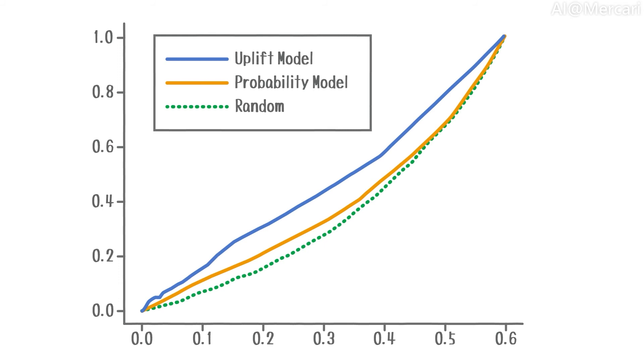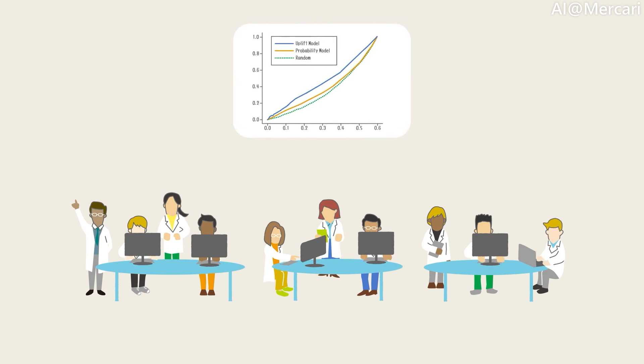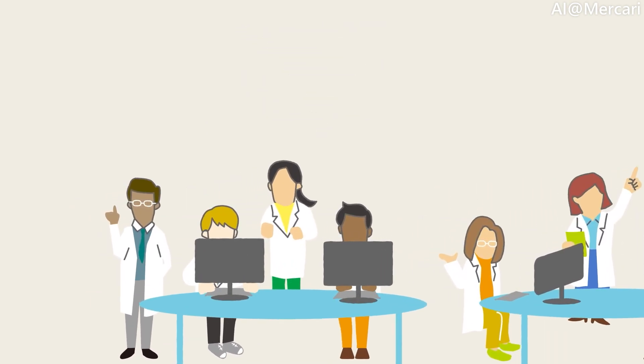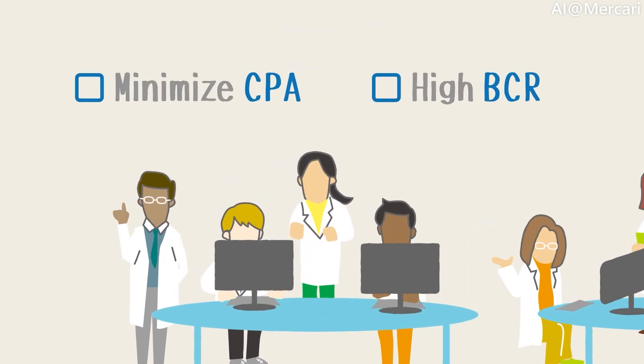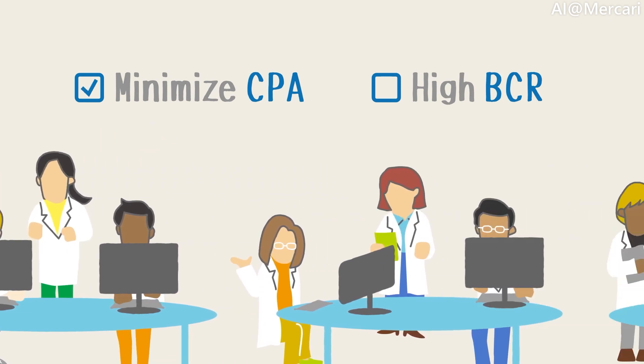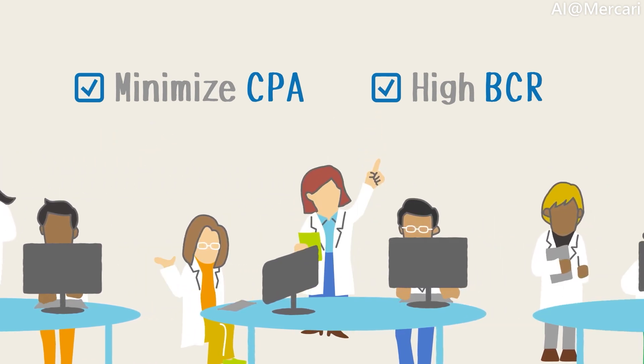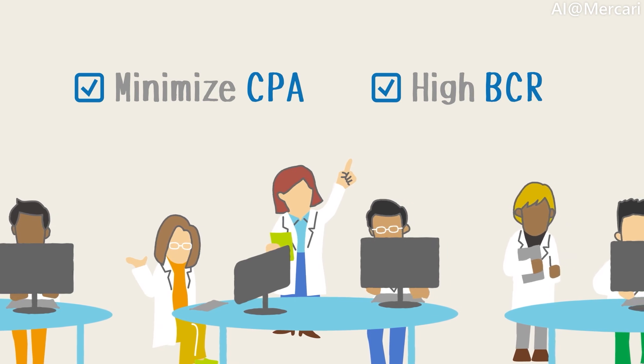Through experiments, we decided that we want our models to filter and select users to send notifications to. And in doing so, we want to minimize CPA while keeping BCR drop to under 5% compared to contacting all customers.